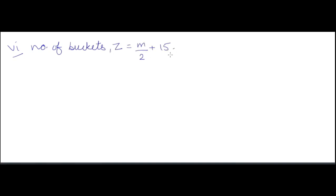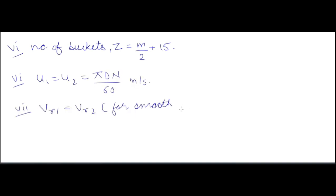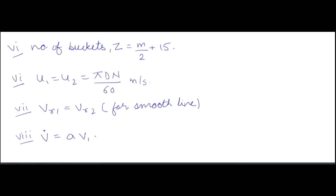The number of buckets equals m/2 plus 15, where m is the jet ratio. Also, u1 equals u2 equals pi*d*n/60, and for smooth blades, vr1 equals vr2. The volumetric flow rate v-dot equals A times v1, where A is the nozzle cross-sectional area and v1 is the velocity of the jet coming out of the nozzle.